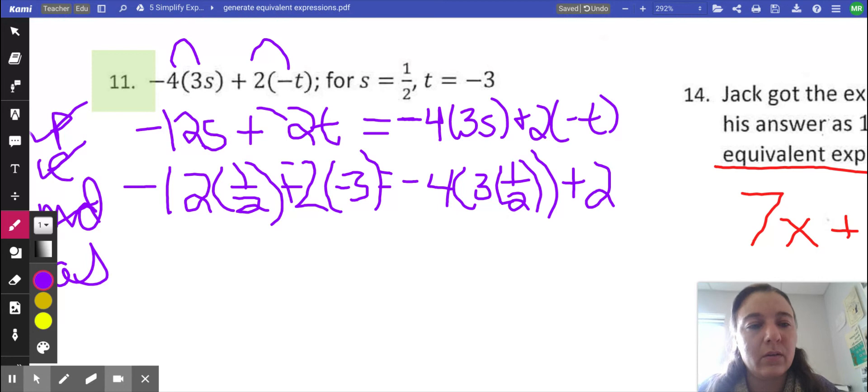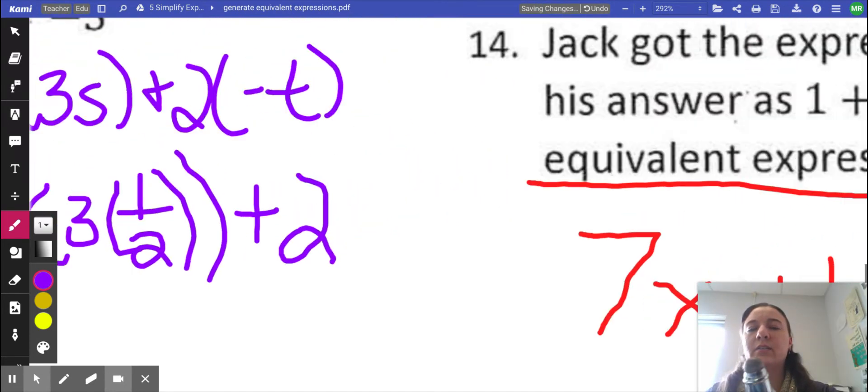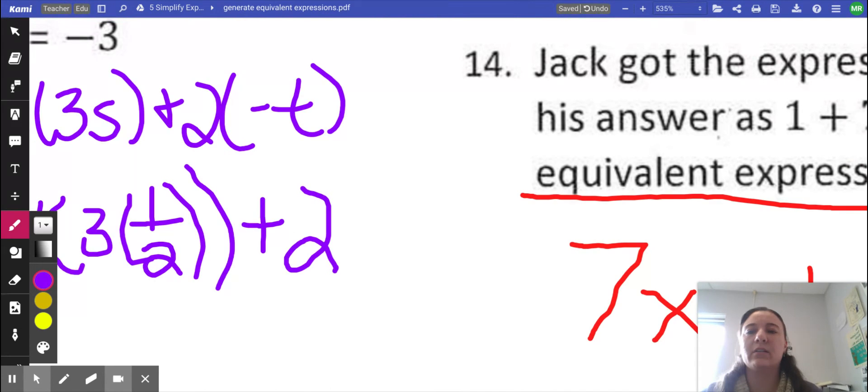I'm going to check my work following the directions from the boss who said for S, we are going to use a half. I use parentheses every single time I substitute. And for T, we're going to use a negative 3.